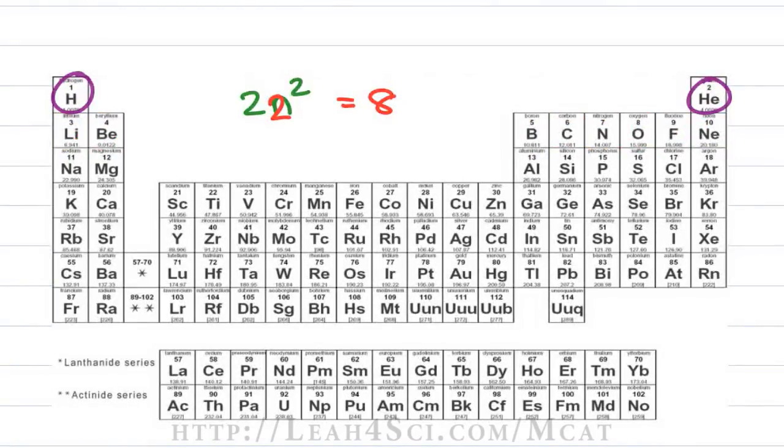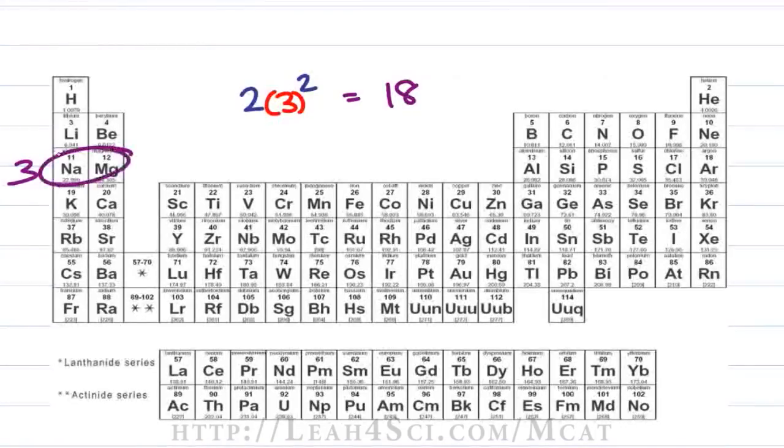When it comes to 3, it gets a little bit harder to see but let me show you anyway. If we have 2N² and N is equal to 3, we have 3 squared is 9 times 2 is 18. But if you count the atoms at principal energy level 3, it looks like once again we only have 8. 2 in the S area, 6 in the P area.